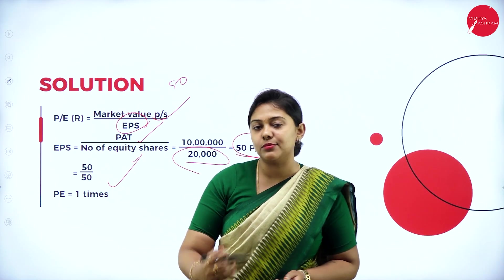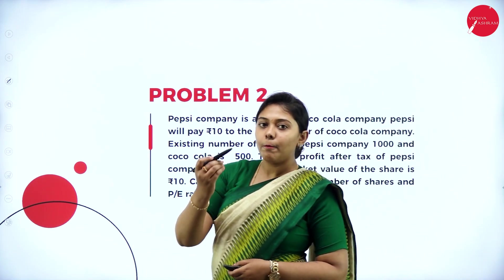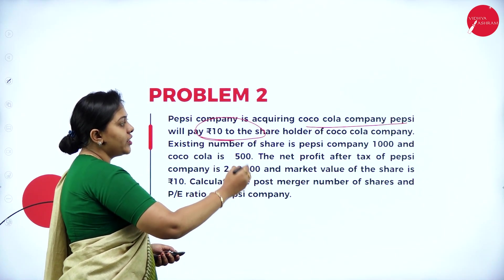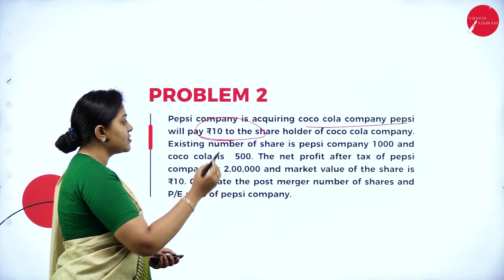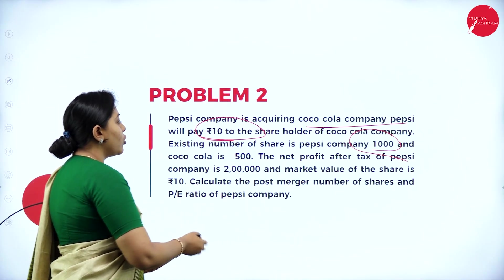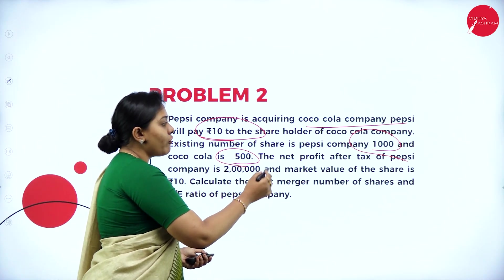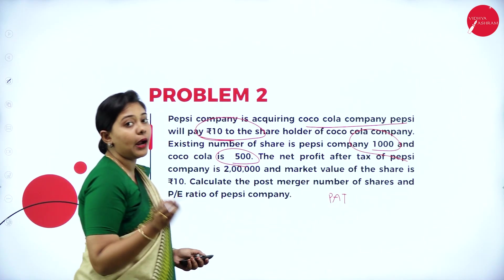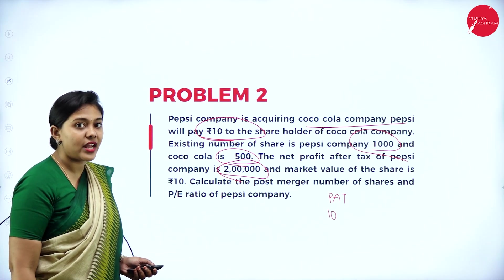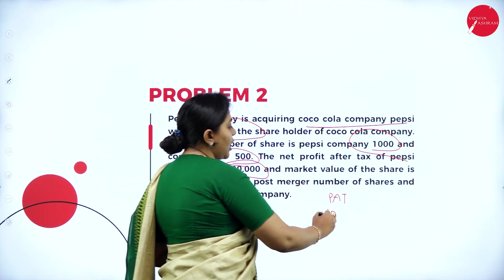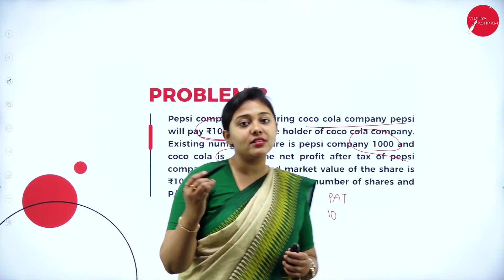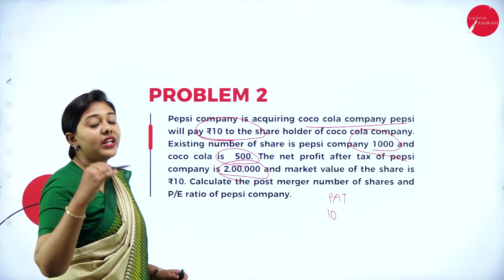Moving forward, problem number 2. Pepsi company is acquiring Coca-Cola company. Pepsi will pay rupees 10 to the shareholders of Coca-Cola company. The existing number of shares with Pepsi company is 1,000 shares, and Coca-Cola has 500 shares. The net profit after tax of Pepsi company is 2 lakh, and the market value of share is 10 rupees each. Calculate the post-merger number of shares and the P/E ratio of Pepsi company. First, we need to understand which is the acquirer company and which is the target company.